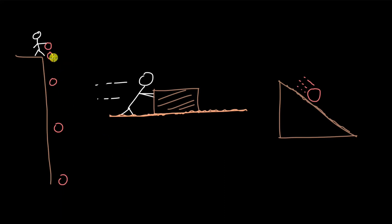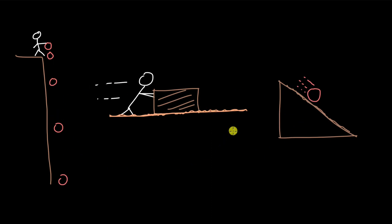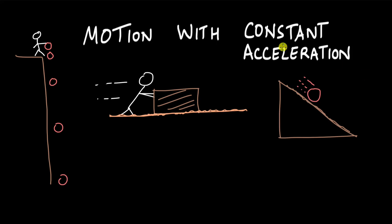What does a ball dropped from a height, a ball rolling down an inclined plane, and a box being pushed to the right moving with an increasing velocity on a rough surface have in common? It turns out each one of these represents a motion with constant acceleration.